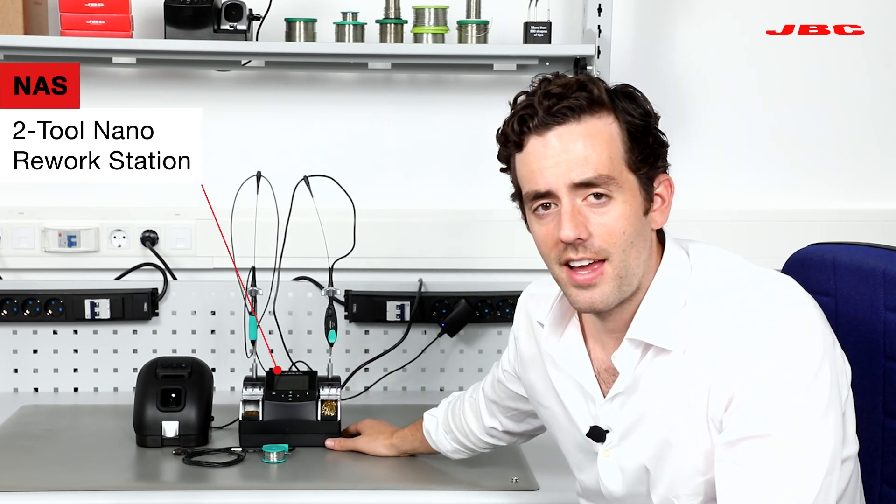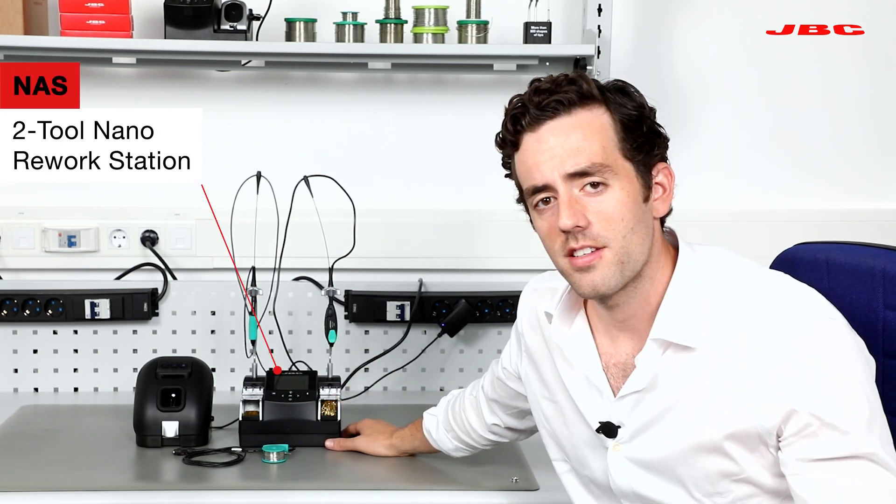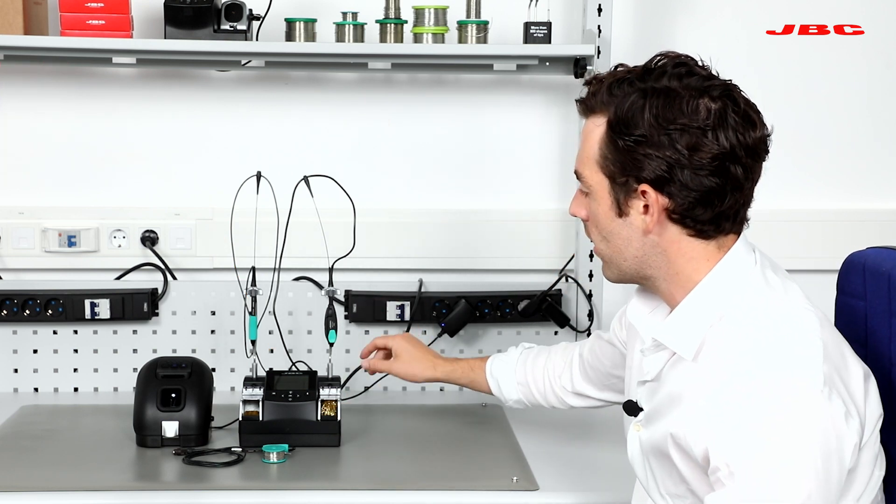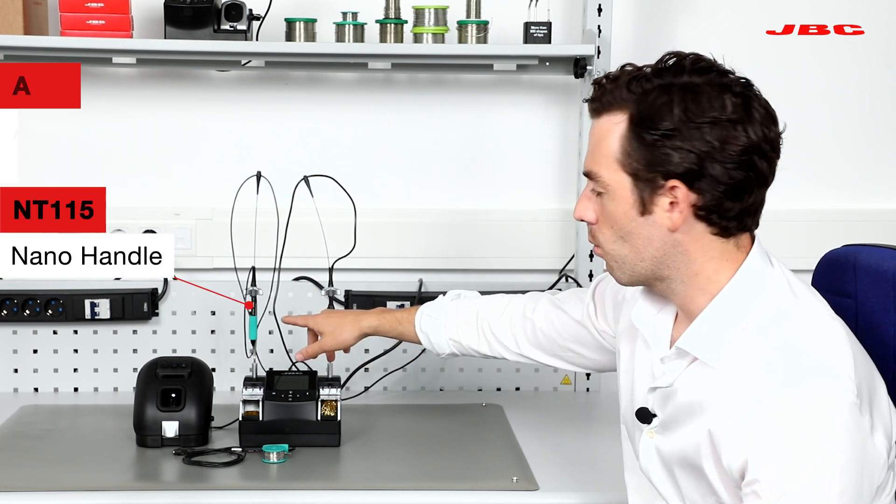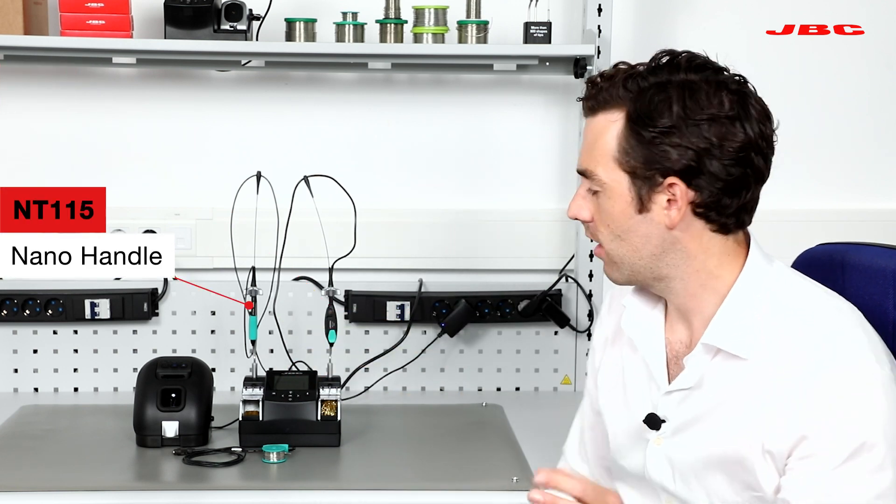This here is the NAS. It's the smallest tips in the market. The NAS is a combination of the AM115, which is the tweezer, and the NT115, which is the precision regular iron.